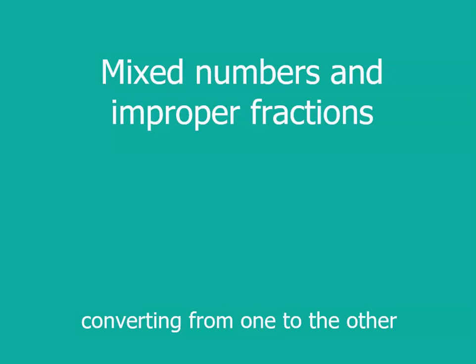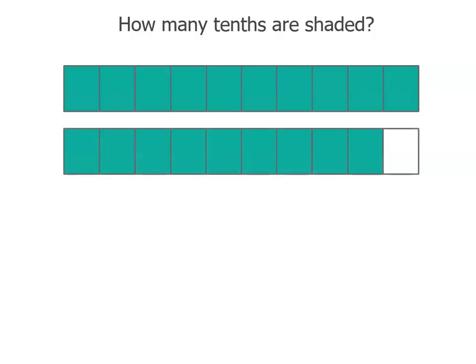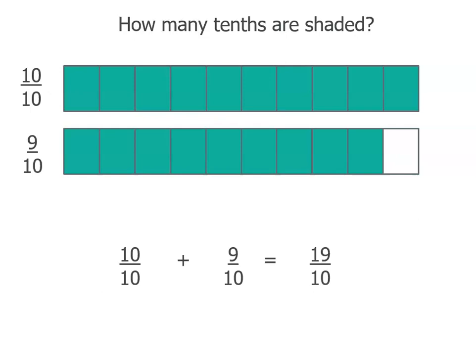Let's look at mixed numbers and improper fractions and how we move from one to the other. First, let's just remind ourselves what they are. If we've got this diagram, how many tenths do we have? Well, there's 10 tenths and 9 tenths, so altogether we've got 19 tenths.